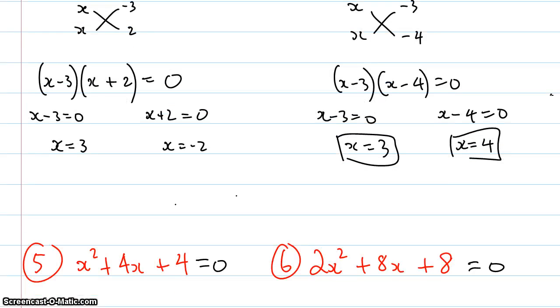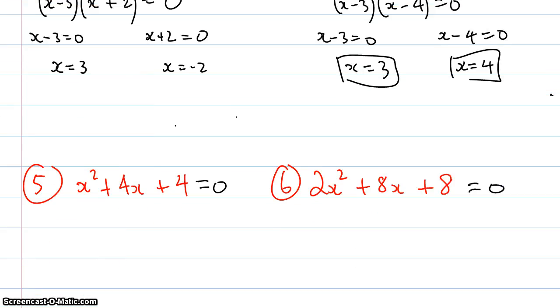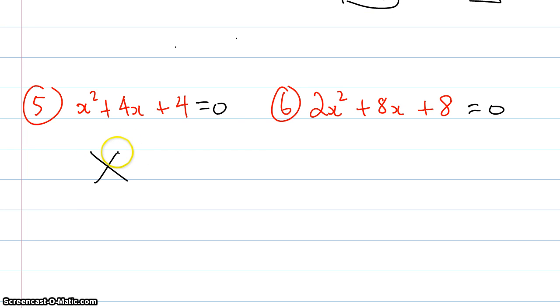Okay I'll move on to the last two questions here. Again I'm going to use the cross method: x, x, 2 and 2. Now as you can see with this one I'm going to get x plus 2, x plus 2, equals 0 which means that's the same as x plus 2 squared equals 0.